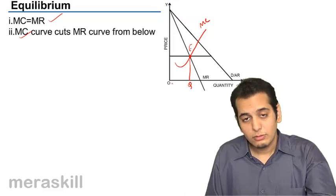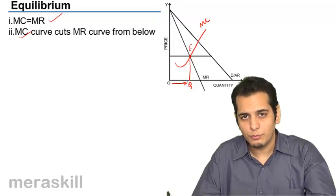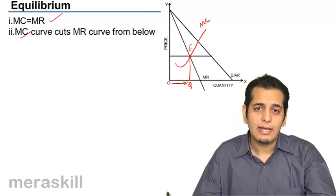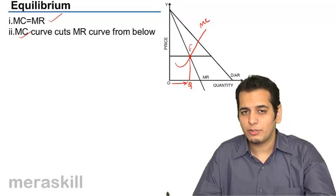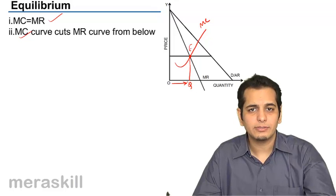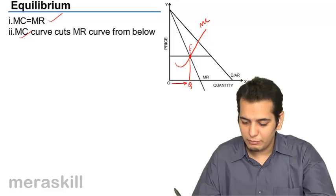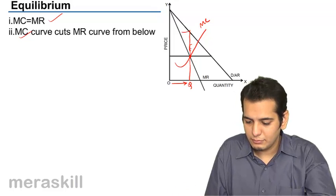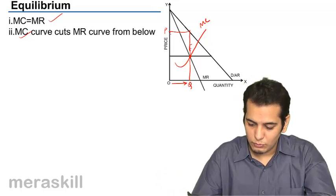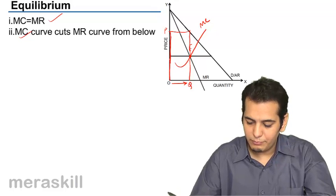So the equilibrium here will be OQ level of output. The firm should produce OQ level of the product and it should offer OQ level of products for sale in the market. What do you think will be the equilibrium price? The equilibrium price here will be OP.